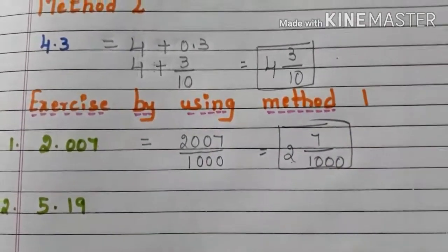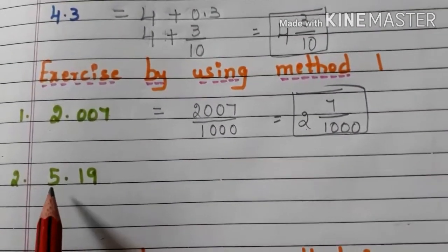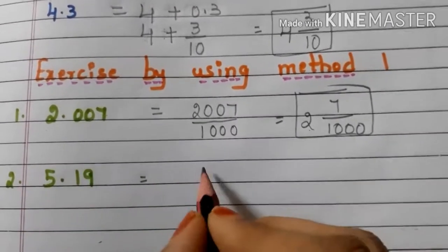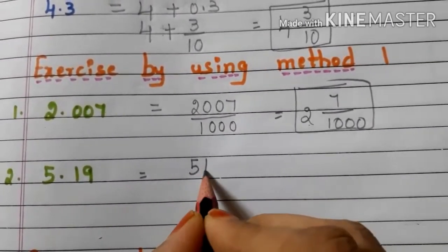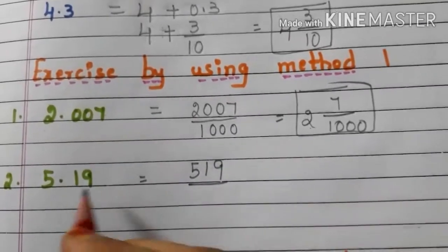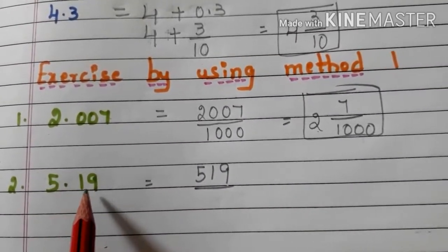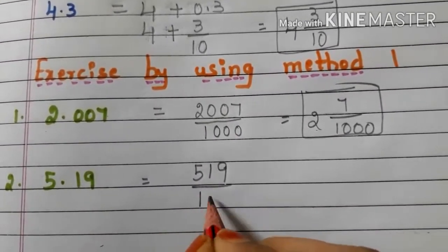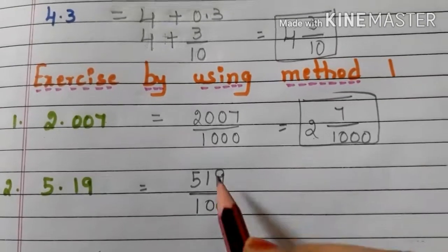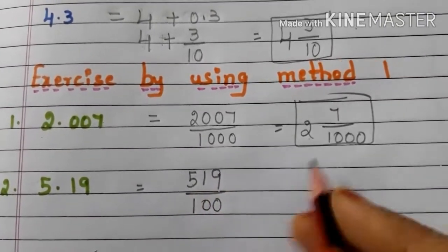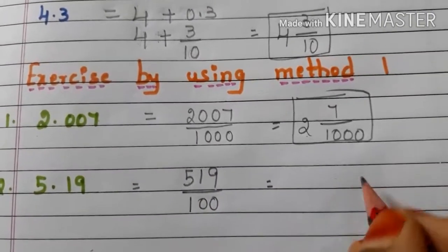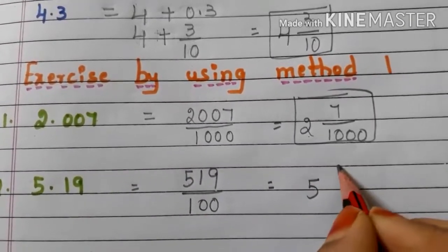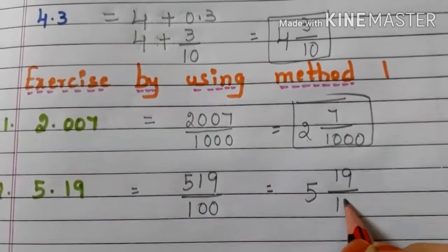Now let us go to another decimal number. Here we have 5.19. Write the number without decimals: 519 by — let us see how many digits are there after the decimal point: 1, 2. So we have to write 100 in the denominator. So we have the fraction 519 by 100. Now convert this into a mixed fraction: 5 and 19 by 100.